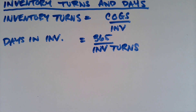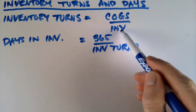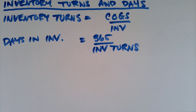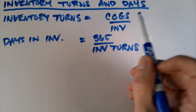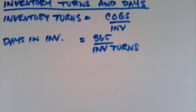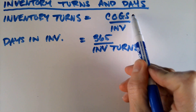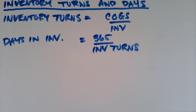Two ratios we often see are inventory turns and days in inventory. Inventory turns is cost of goods sold divided by the amount in your inventory. Students often think it should be sales on top, but inventory is recorded at cost, and so our measure of sales at cost is cost of goods sold. In order to get an apples-to-apples comparison, we can't use sales because the sales price is higher than the cost. Days in inventory is just 365 divided by inventory turns. The 365 comes from 365 days in a year, and inventory turns is also in terms of per year, which is why we end up with days in inventory being 365 over inventory turns.